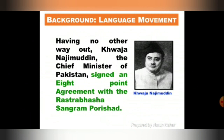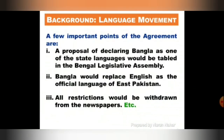My dear students, in our next screen you will see some of the important points of the 8-point agreement. Number 1: a proposal of declaring Bangla as one of the state languages would be tabled in the Bengal Legislative Assembly. Number 2: Bangla would replace English as the official language of East Pakistan. Number 3: all restrictions would be withdrawn from the newspapers.